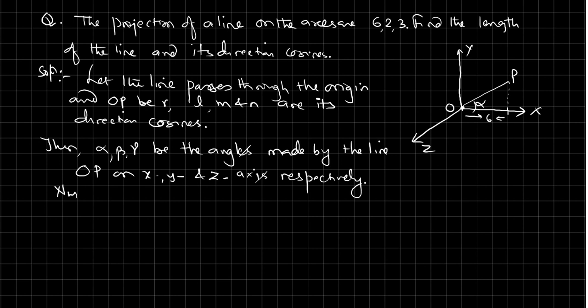Now what is cos alpha? Cos alpha equals 6 over r, base by hypotenuse. And cos beta equals 2 over r, and cos gamma equals 3 over r. These are the relations, that means l equals 6 over r, m equals 2 over r, and n equals 3 over r.